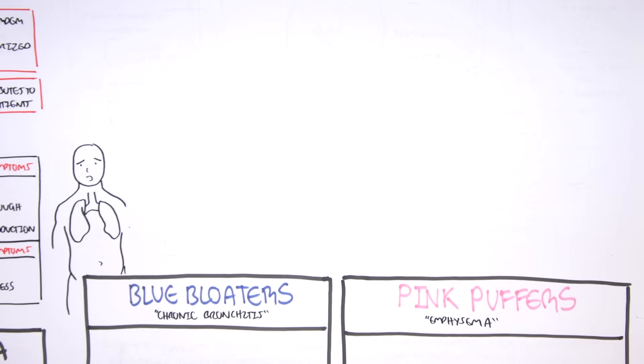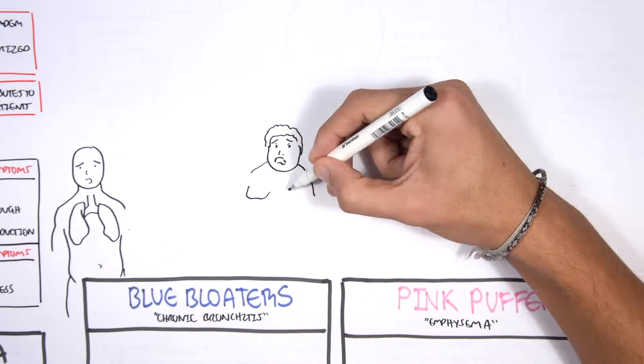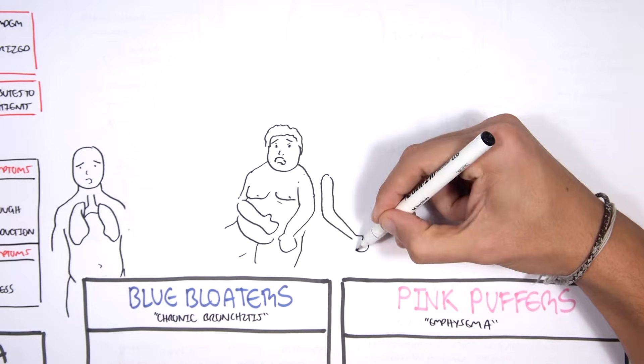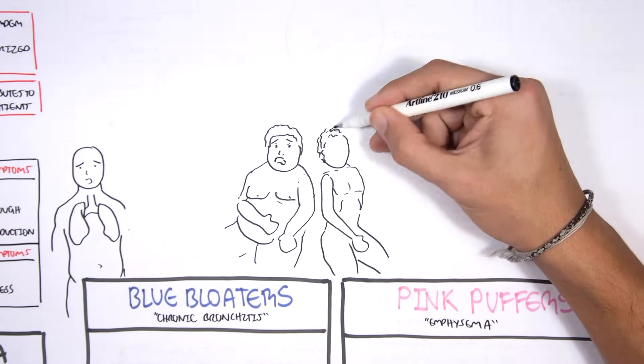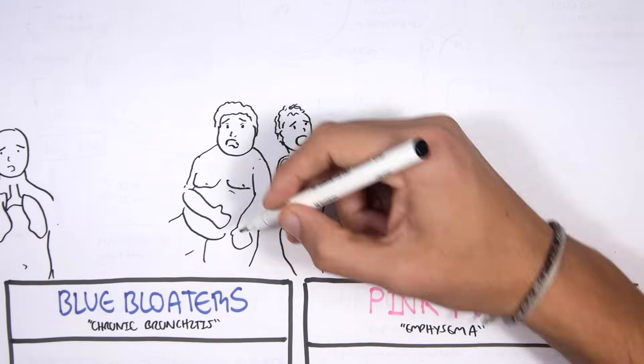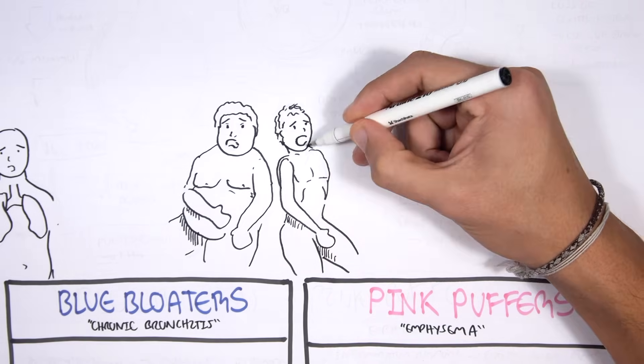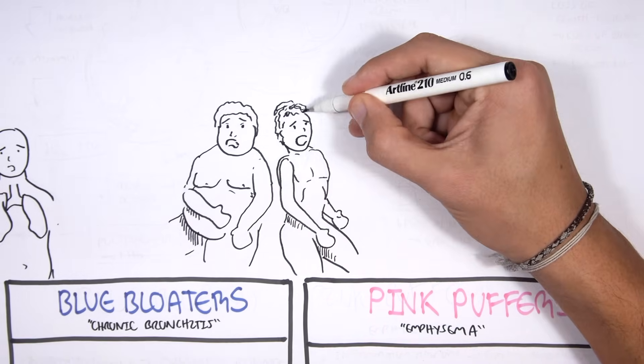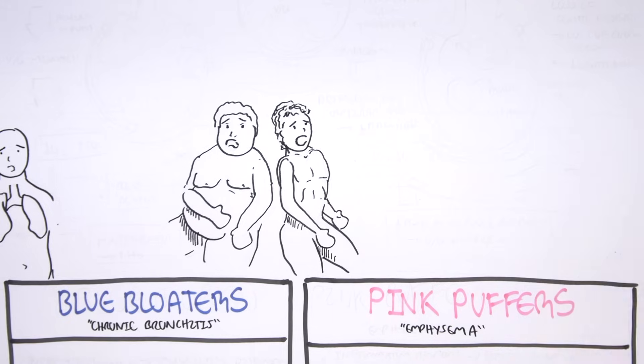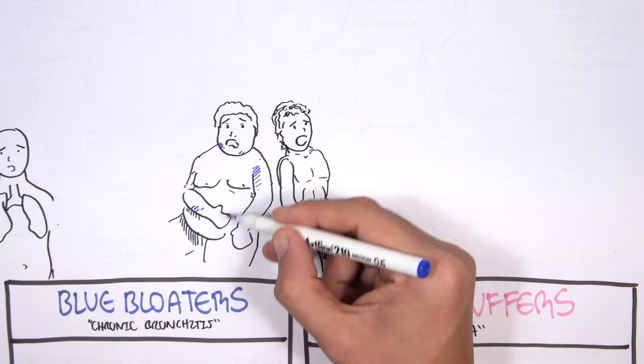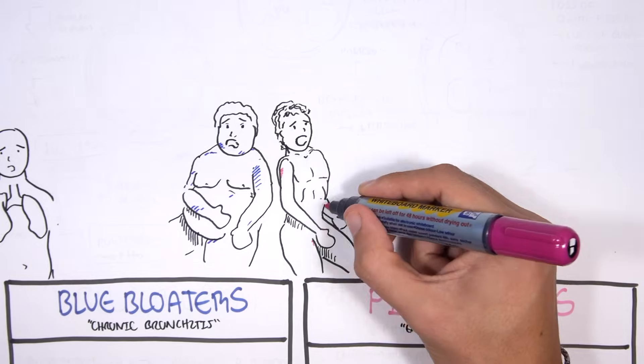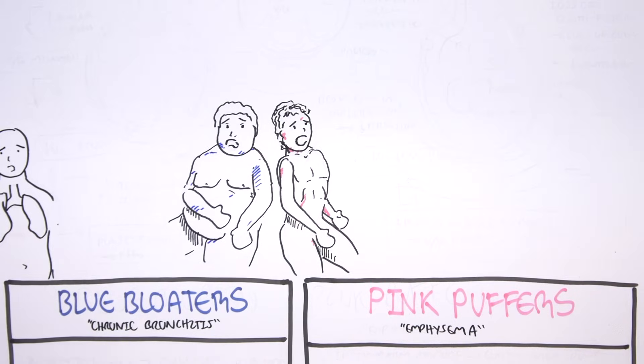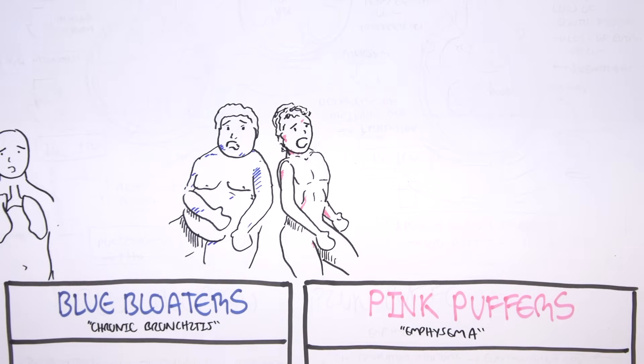Now we will talk about the blue bloaters and the pink puffers. Here I am drawing a diagrammatical, stereotypical representation of patients that present with chronic bronchitis as well as emphysema side-by-side. We will use this to compare the difference between the two chronic obstructive pulmonary diseases.